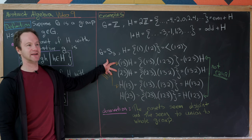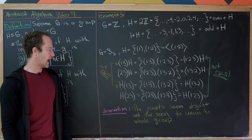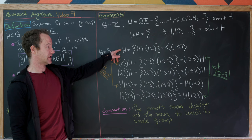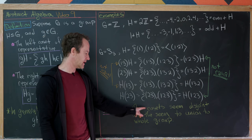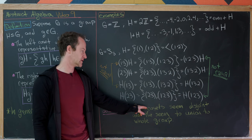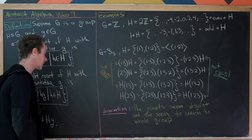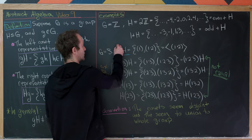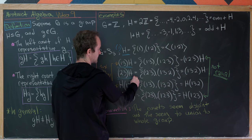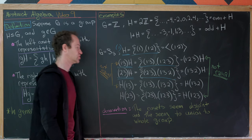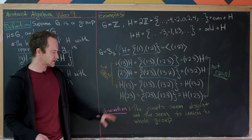If we restrict our attention just to left cosets or just to right cosets, the group itself is both a left and a right coset where the representative is the identity. The cosets are seen to be disjoint and they union to the whole group. Looking at the left cosets, these sets are disjoint — they do not contain any of the same elements — but they union to the whole group. We will prove this later.